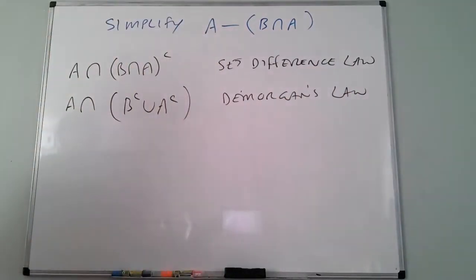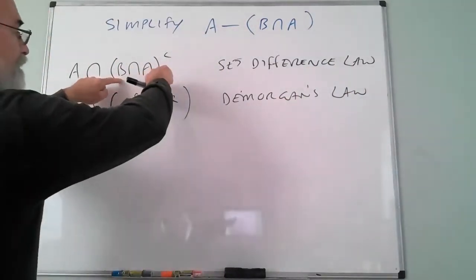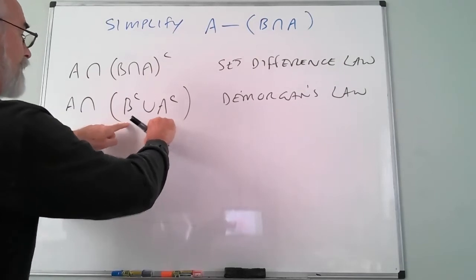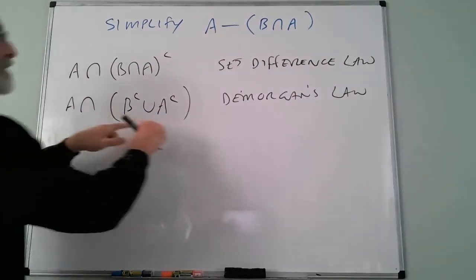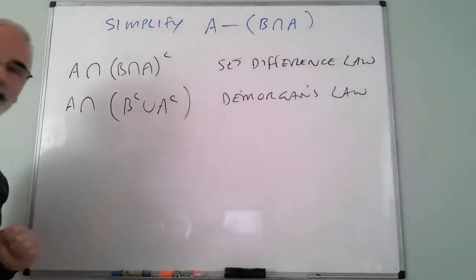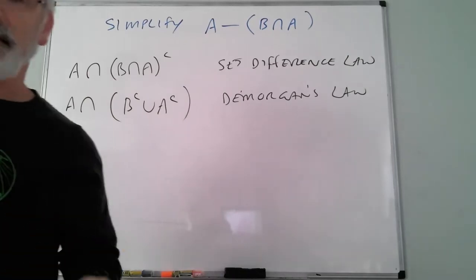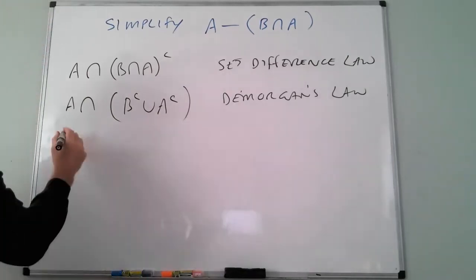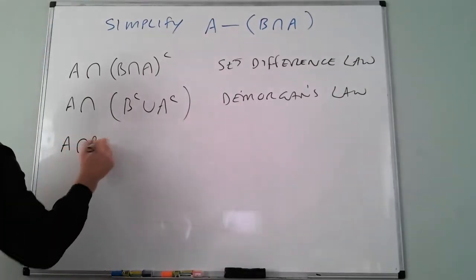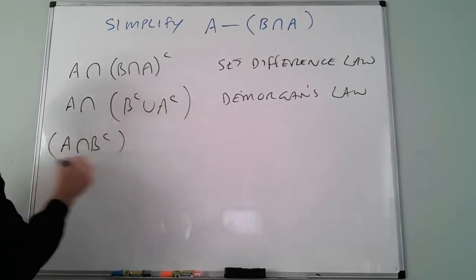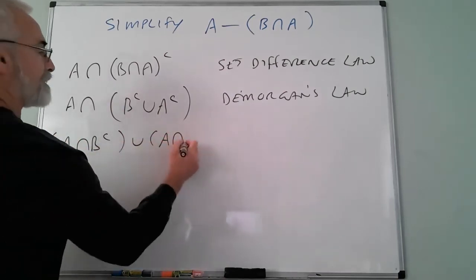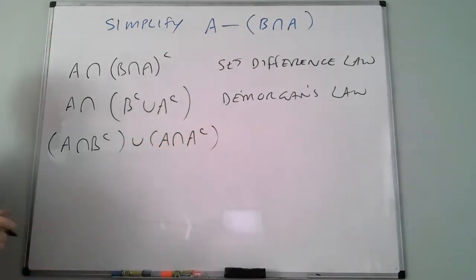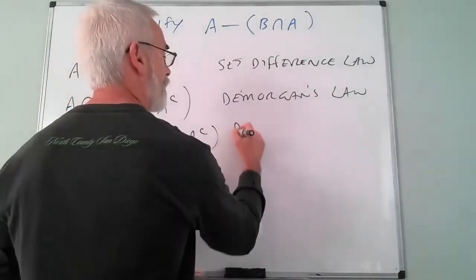The complement of an intersection becomes the union of the complements. Now I have A intersecting a union, so applying the distributive law: A∩(B^c ∪ A^c) = (A∩B^c) ∪ (A∩A^c).